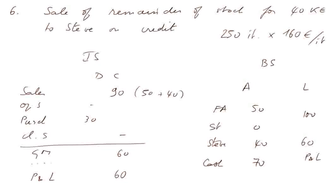Transaction 6 led us to this income statement: sales of 90, purchases of 30, no closing stocks, gross margin of 60, and since we have no recorded charges yet after the gross margin, P&L is 60.